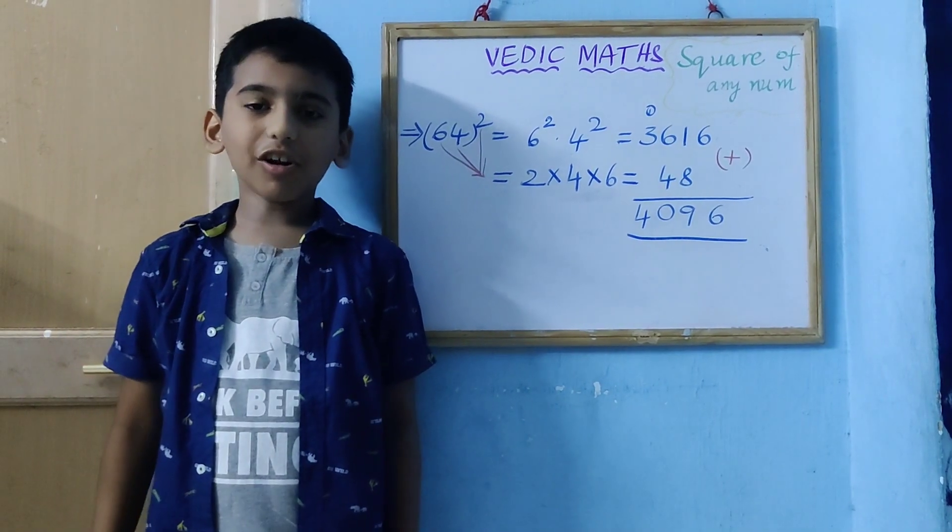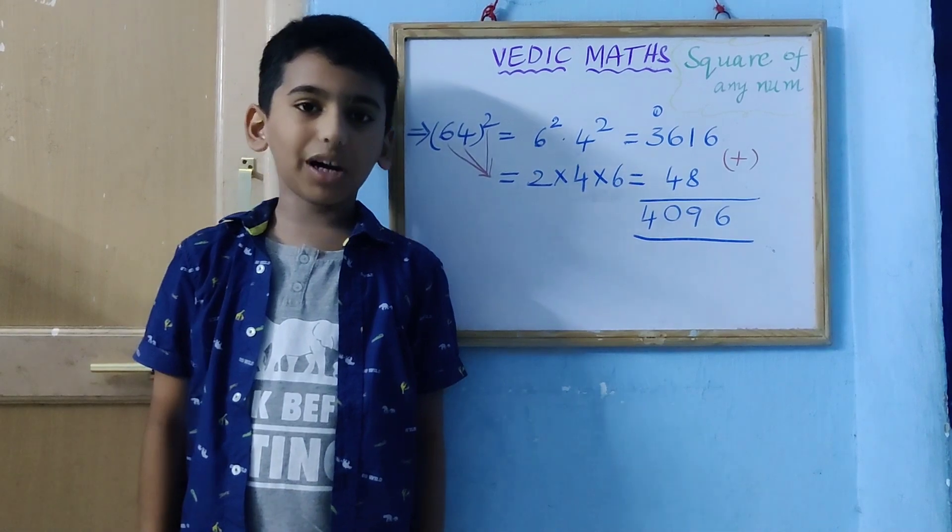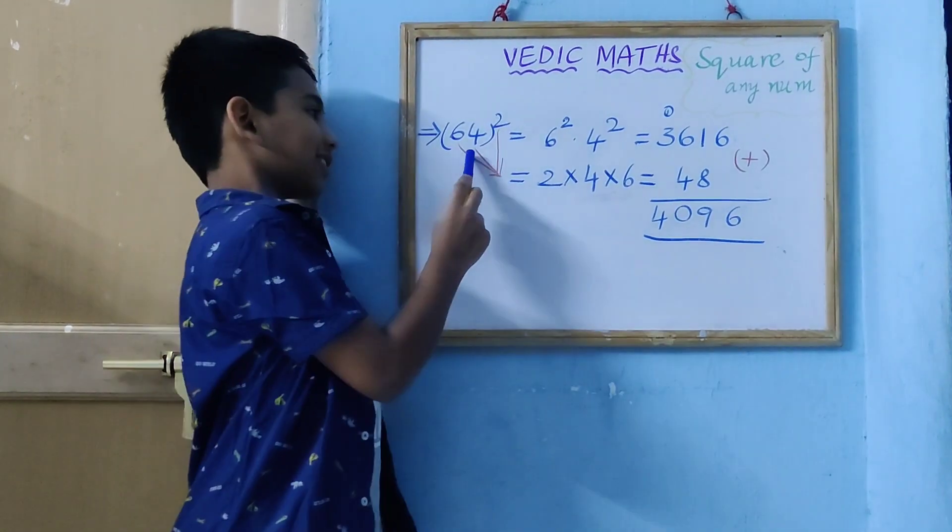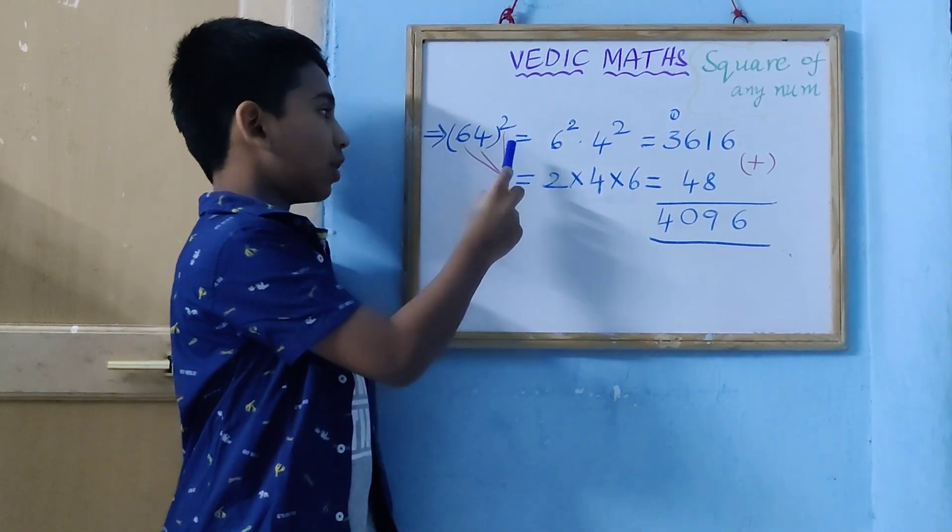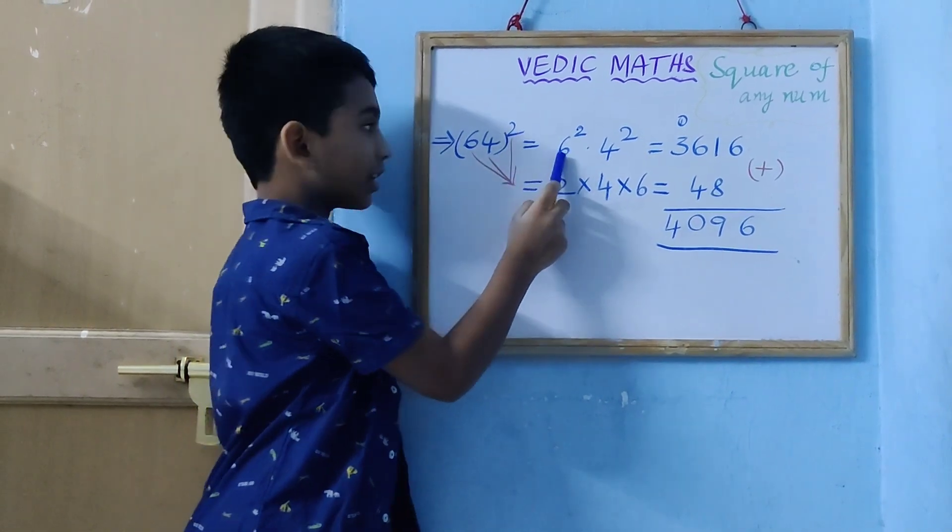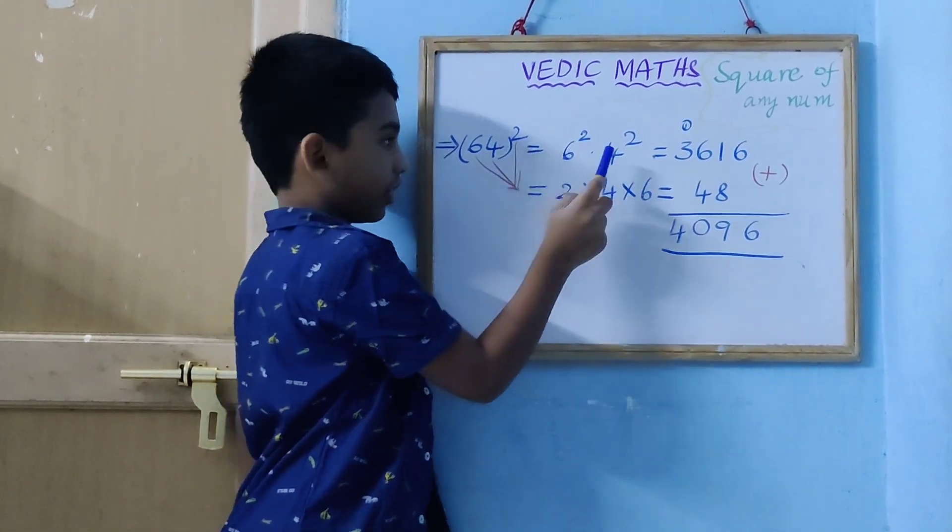Hi friends, today I will tell you how to find a square of any number. First, we take 64 square equal to 6 square and 4 square.